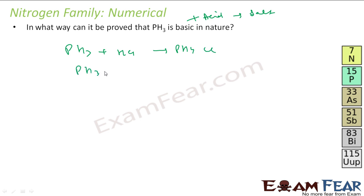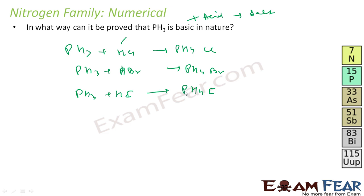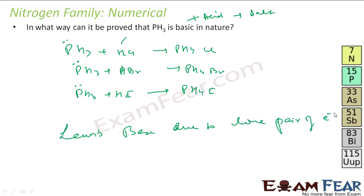If PH3 reacts with HBr it forms PH4Br; if PH3 reacts with HI it forms PH4I — all these are acid-base reactions. Phosphine acts as a base because of the lone pair of electrons on the phosphorus atom. Due to this lone pair, it acts as a Lewis base — the same as in ammonia, where nitrogen has a lone pair of electrons.